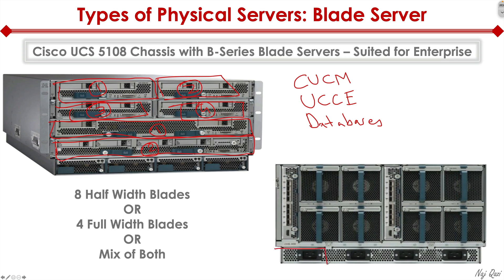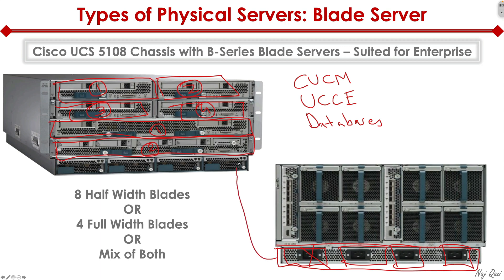On the back of the server, we have multiple power supplies for power high availability and redundancy, because we don't want one power supply going out and bringing down our environment. These servers are typically running critical business functions — like your website or a key database all of your employees are using. You absolutely need power redundancy. If you're going to fully populate the chassis, you better have all power supply slots 100% populated.